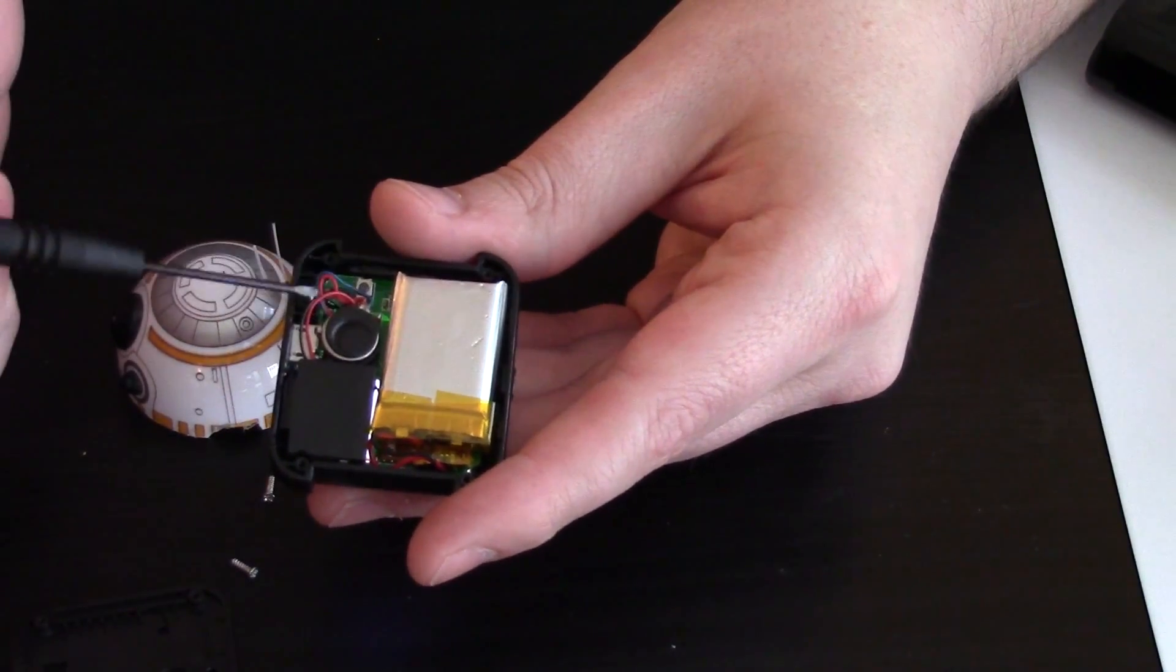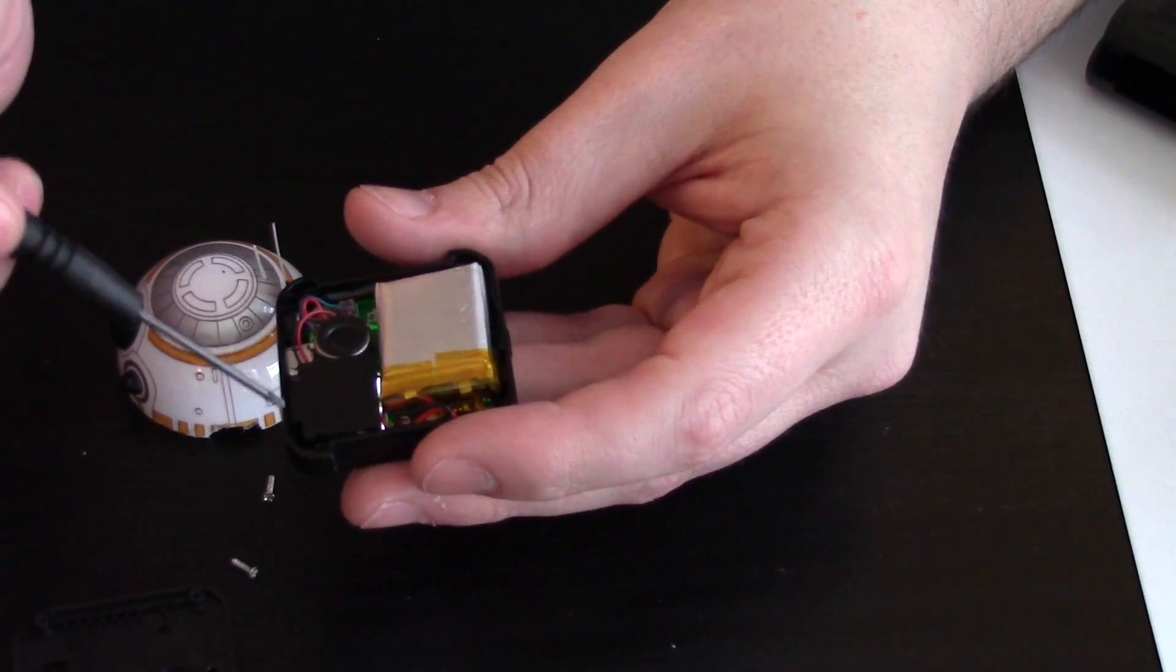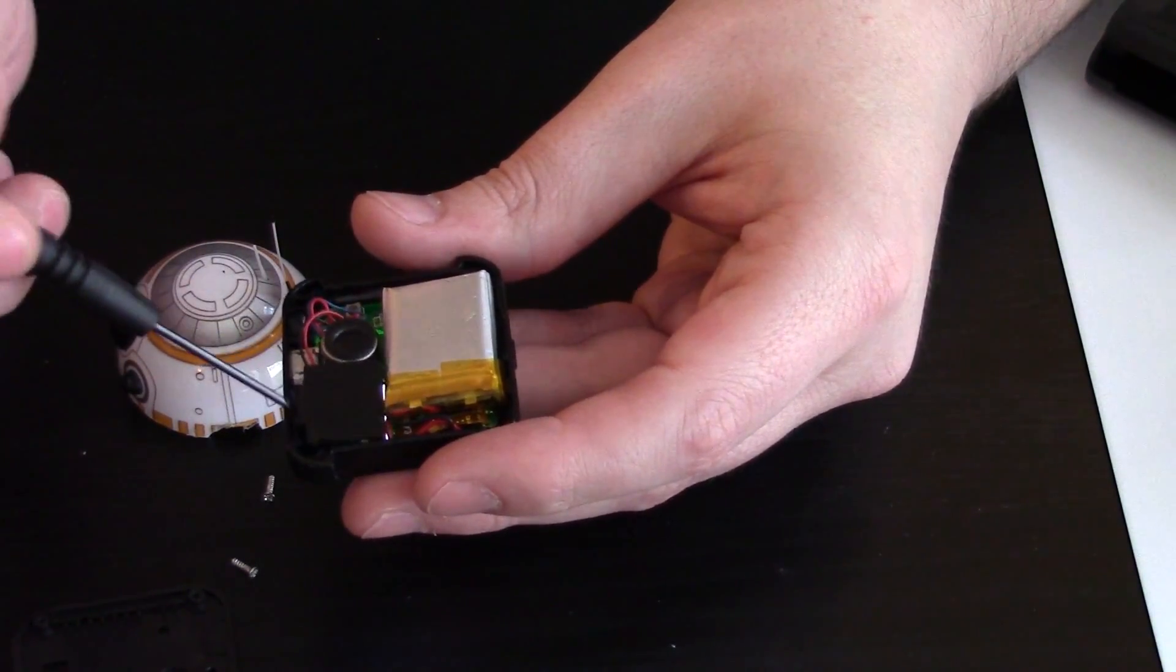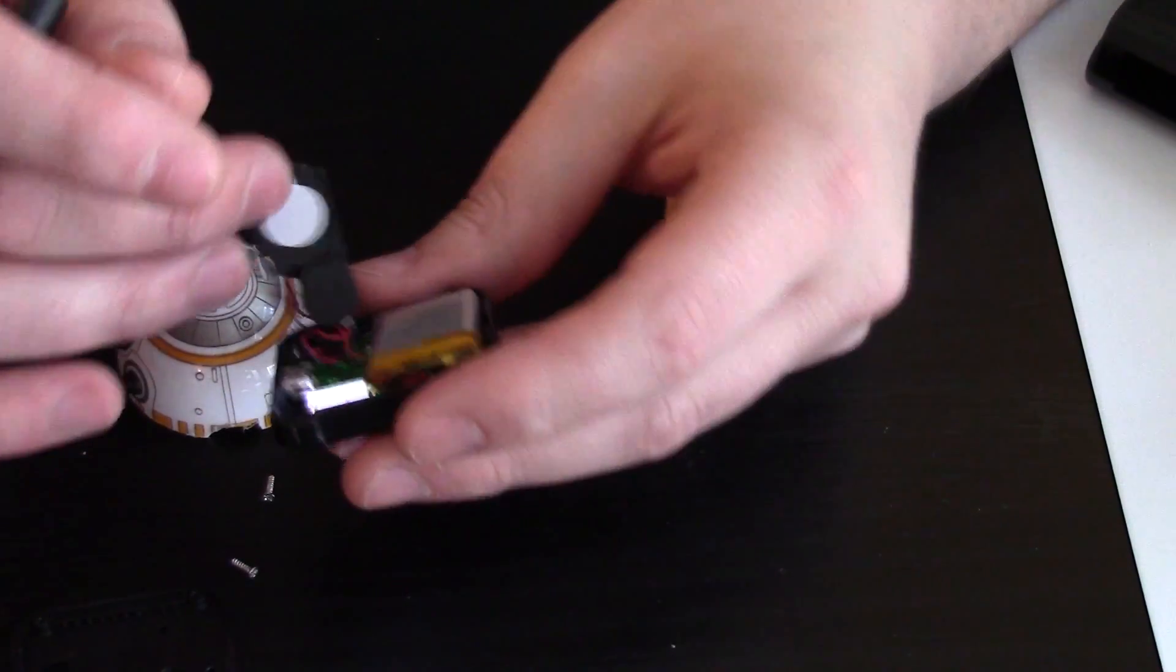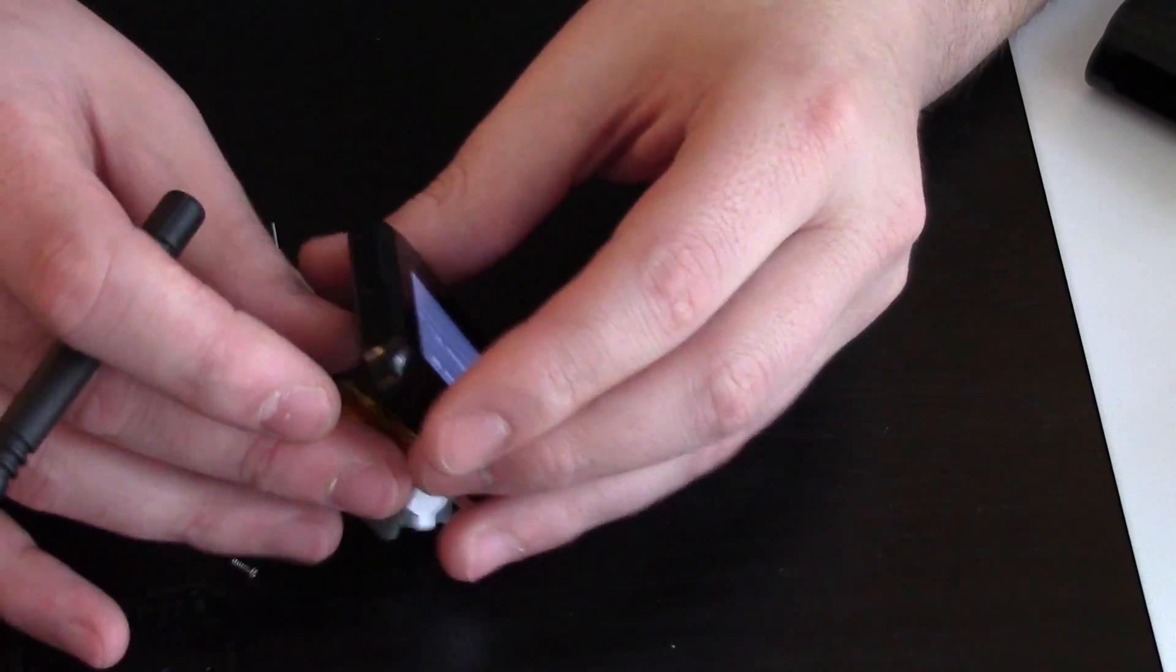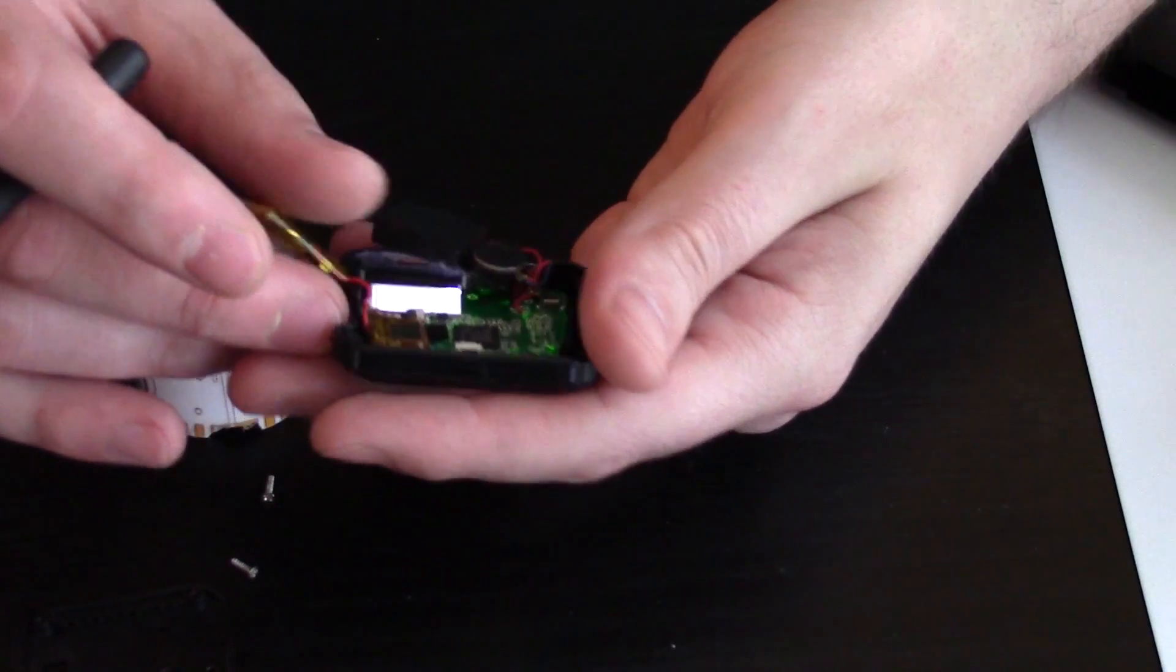As you can see we do have a battery, we do have a speaker, then it's got the board, the charger, and the screen. Wow, okay. So let's see how easily this all pops out here.